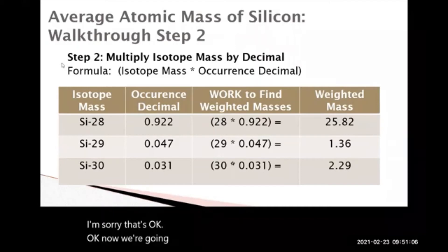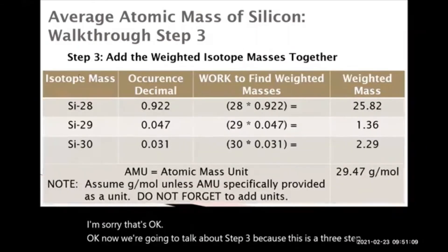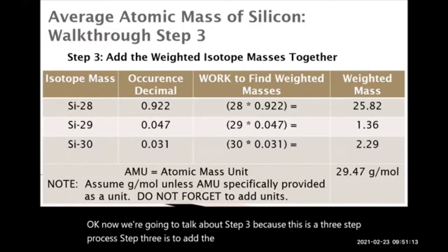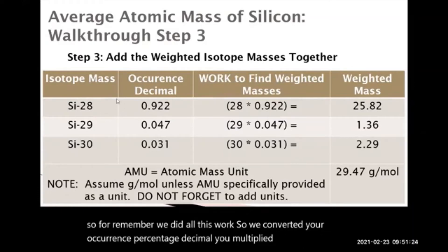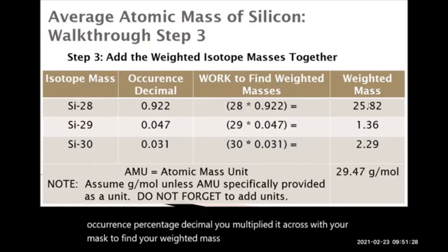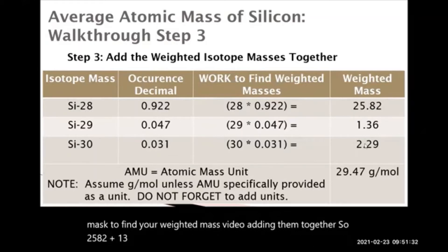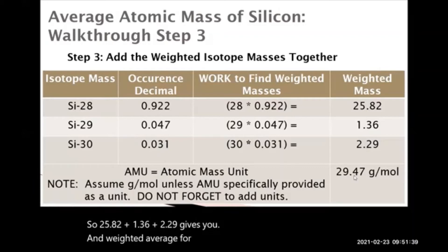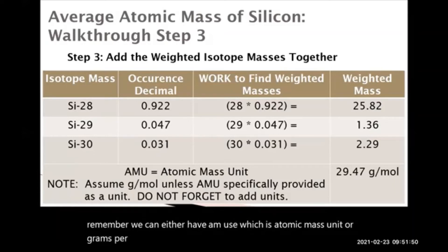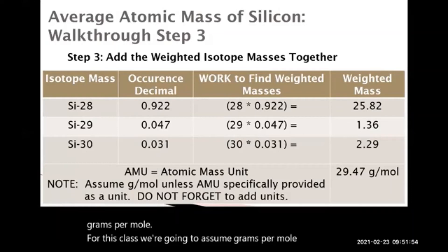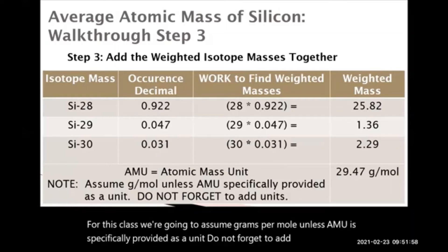Step three is to add the weighted isotope masses together — this is a three-step process. We converted the occurrence percent to decimal, multiplied it by the mass to find the weighted mass, and now we're adding them together. So 25.82 plus 1.36 plus 2.29 gives you a weighted average for silicon of 29.47 grams per mole. We can either use AMUs (atomic mass units) or grams per mole — for this class we'll assume grams per mole unless AMU is specifically provided. Do not forget to add units.